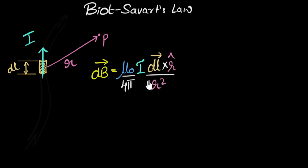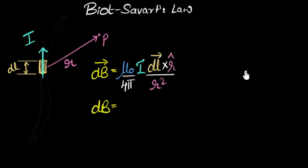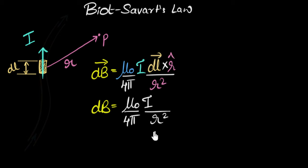I always found vector equations a little scary because of all these cross products. So first let's look at the magnitude. The magnitude of dB will be (μ₀/4π) × I / r², times the magnitude of the cross product dL × r̂. The magnitude of A × B is |A| × |B| × sine of the angle between the two.